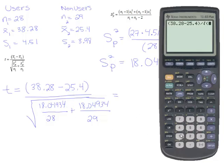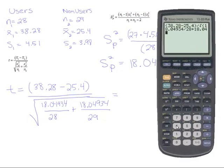And then we just put this in as we see it. So 18.04934 divided by 28 plus 18.04934 divided by 29.